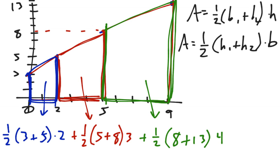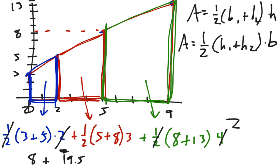Adding it all up: one-half times 2 cancels to give 8; one-half times 13 times 3 is 39 over 2, which is 19.5; and one-half times 21 times 4 is 42. So our final answer is 69.5 square units — the approximate value of the integral from 0 to 9 of f(x) dx using the values in the chart.